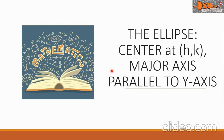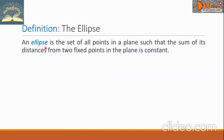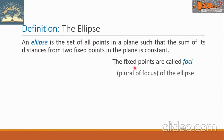Hi everyone. Today we're going to study the ellipse with center at HK and major axis parallel to the Y axis. Let us first define an ellipse. An ellipse is the set of all points in a plane such that the sum of its distances from two fixed points in the plane is constant. The fixed points are called foci — plural of focus — of the ellipse.